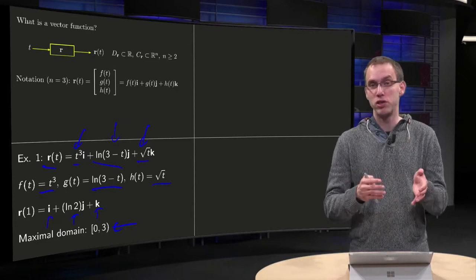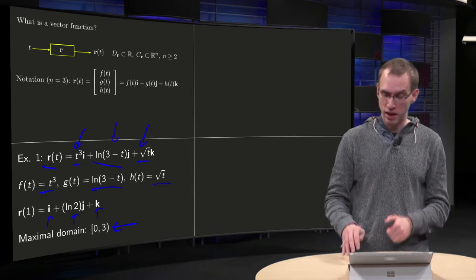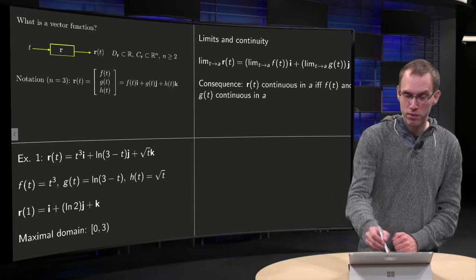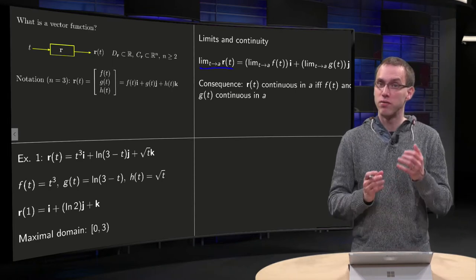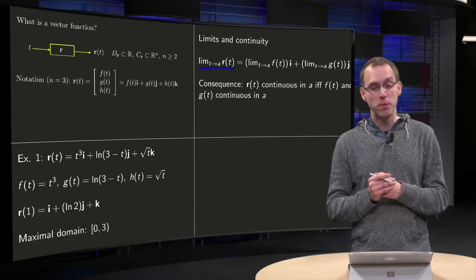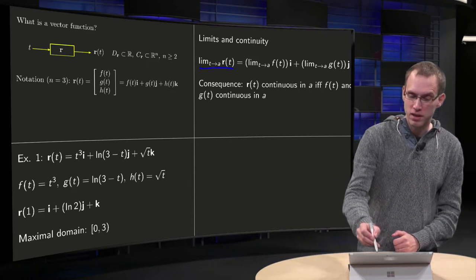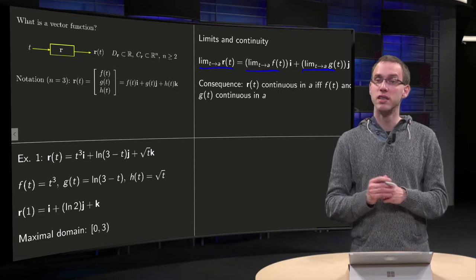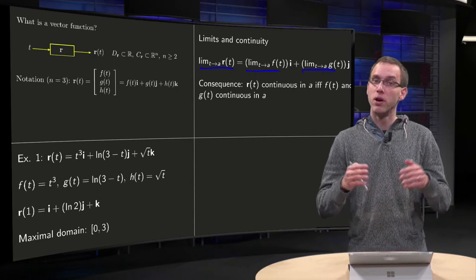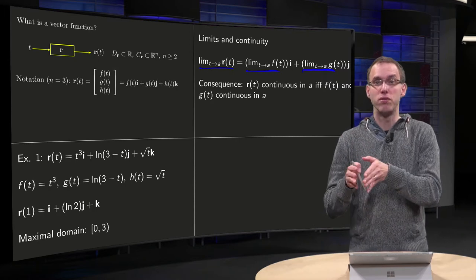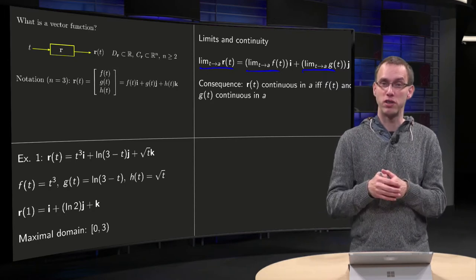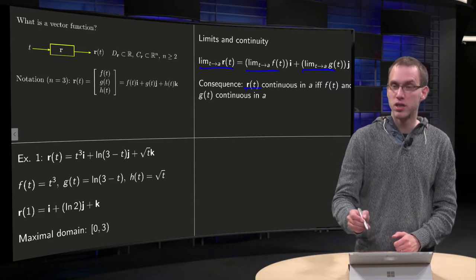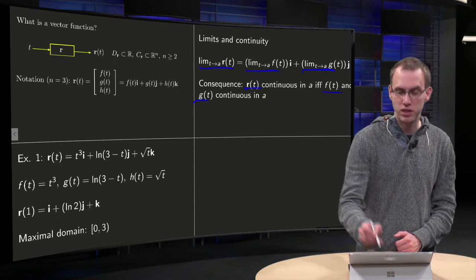So if you look at a vector function, you just look at the components all the time. Same holds if you look for limit and continuity. If you take limit t to a from r(t), let's take a function of two components now to ease the notation a bit, then you have to take the limit of f times i and limit of g times the vector j. So continuity of a vector function means continuity of its components and vice versa, so the consequence: r(t) is continuous if and only if both f and g are continuous.